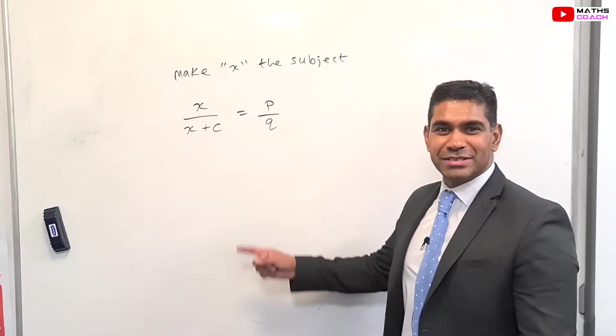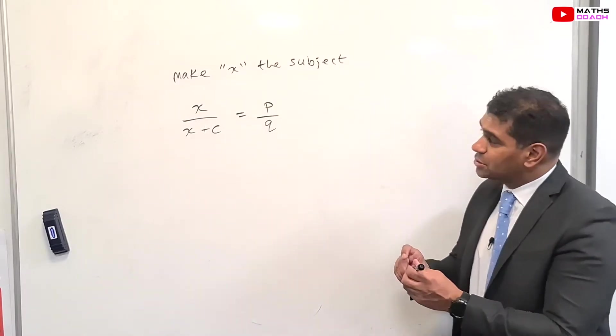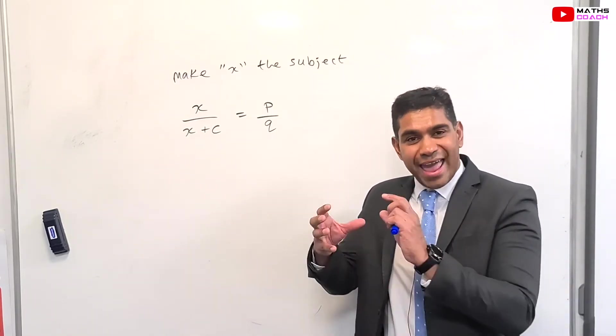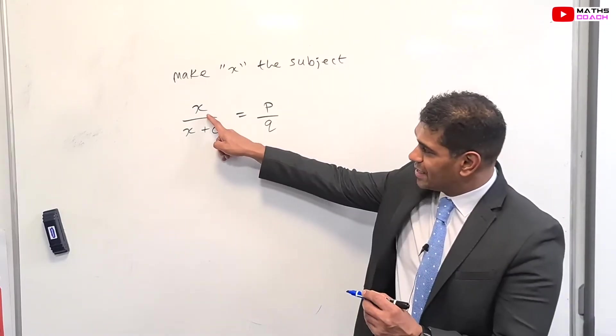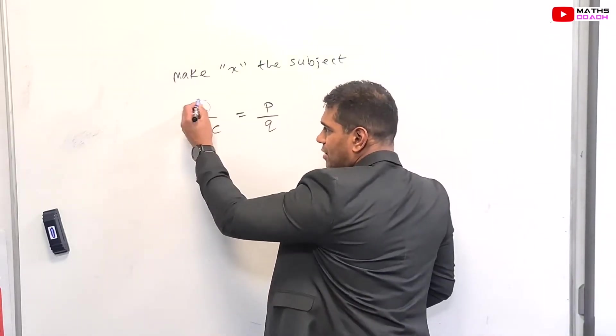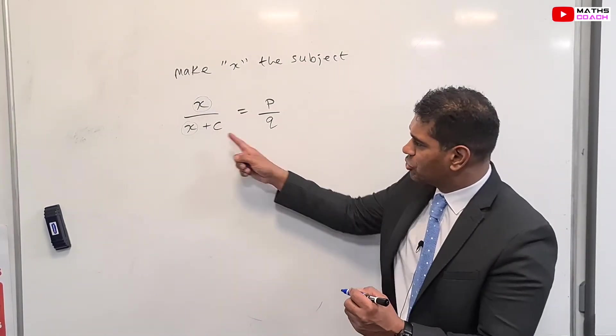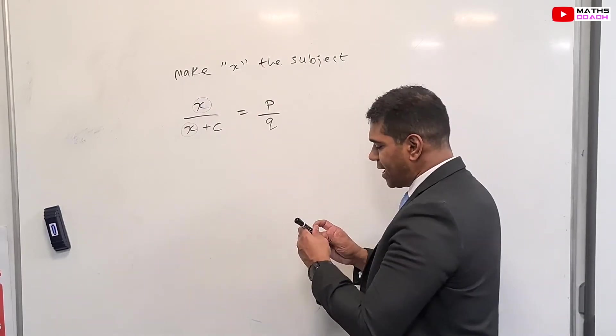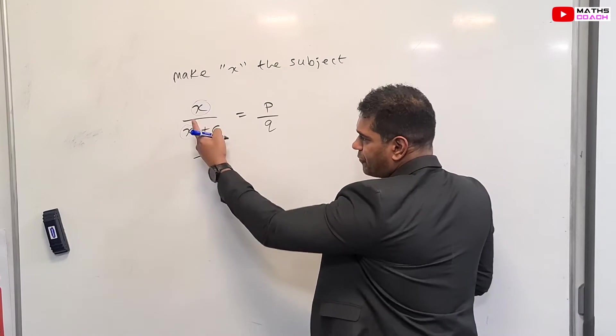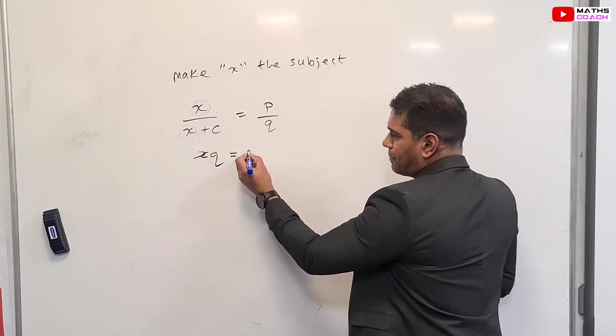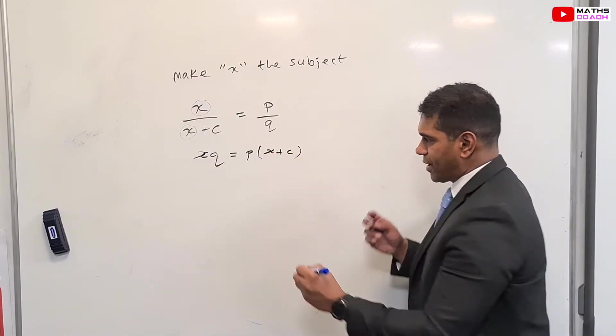Hi guys, I'll be taking this question today as a guest appearance. Now the question says make X a subject. We all know that X a subject means X on its own. The problem that we face is that we see an X on the numerator and an X on the denominator. So the first thing we might have to do is to cross multiply. So if we cross multiply here, we're going to get XQ, alphabetical order, equals P, and then we're going to multiply by X plus C. So we would have to put a bracket there.